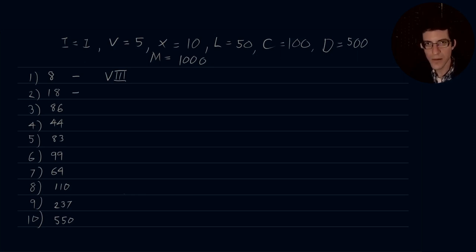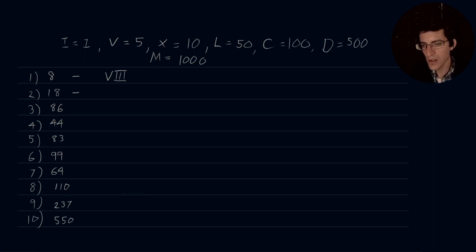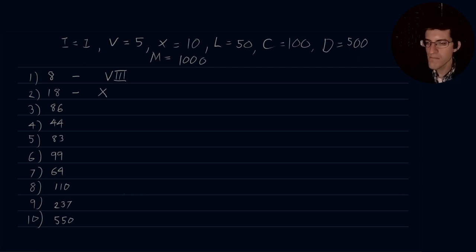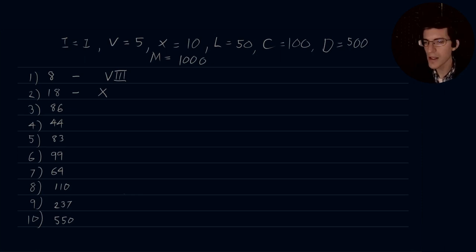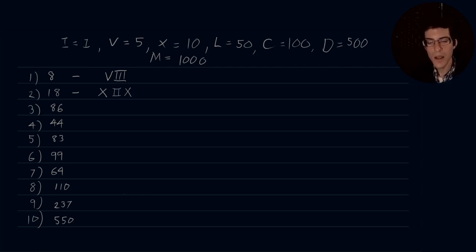Next, 18. The closest value is X. We could have XX which would be 20, and we need to take 2 away from 20 in order to get 18. We use the idea of summation — if I have XX that gives me 20, and in order to subtract values I put them in between the two greater values. So 10 minus 2 gives us 8, and 20 minus 2 gives us 18. So 18 is XVIII.